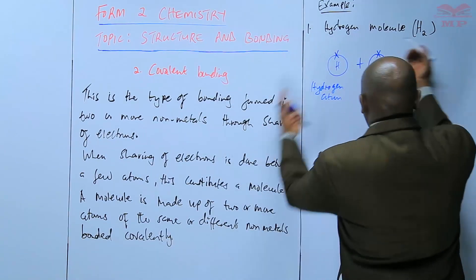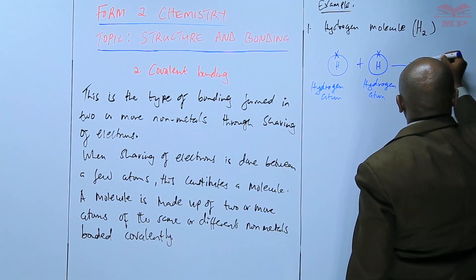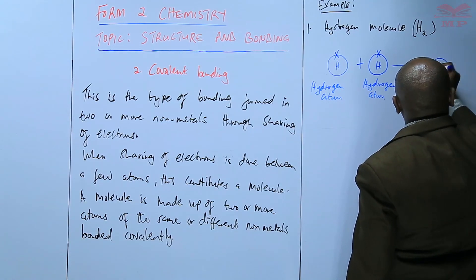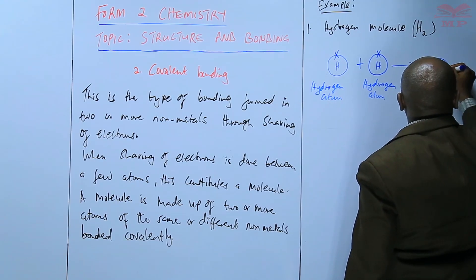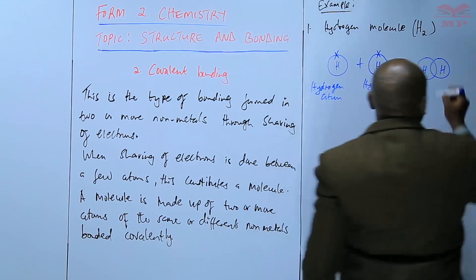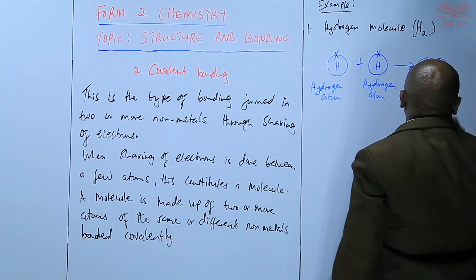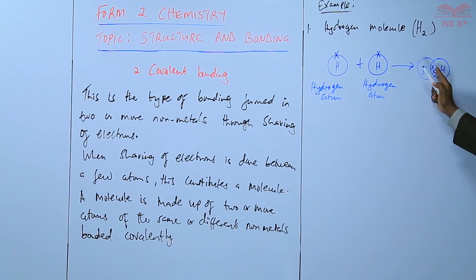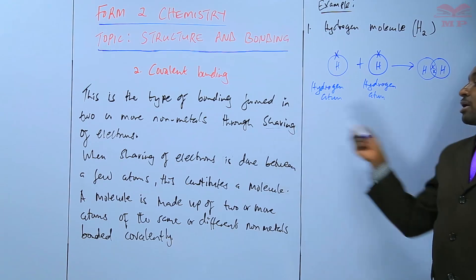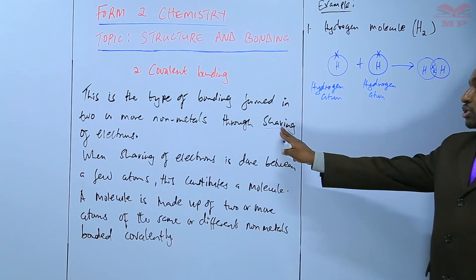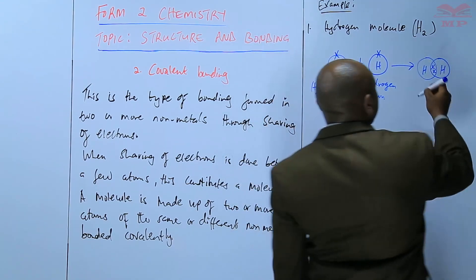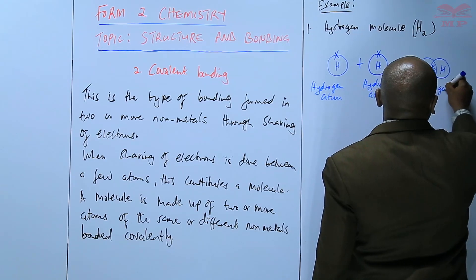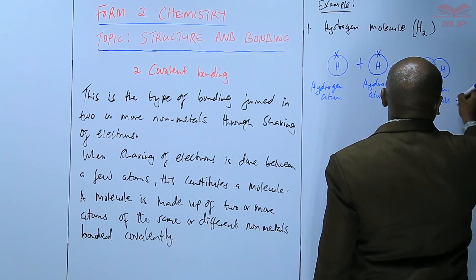The two hydrogen atoms will come together and overlap, such that the two electrons are shared between them. So this atom is stable because it has two, and the other one is also stable because it has two. That is what we mean by sharing of electrons.